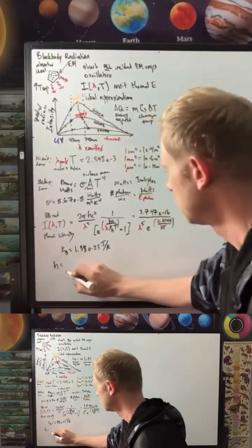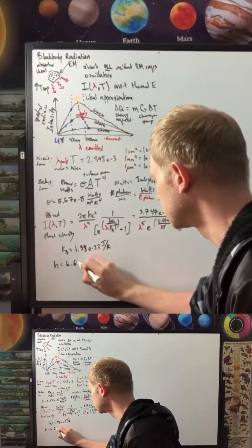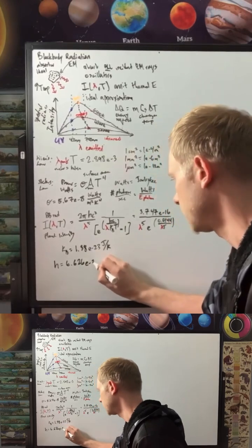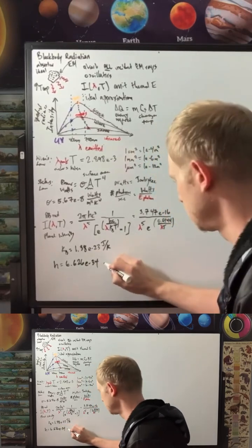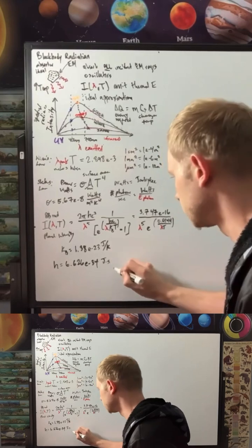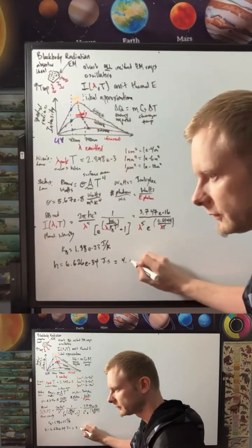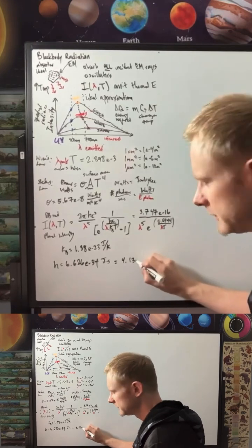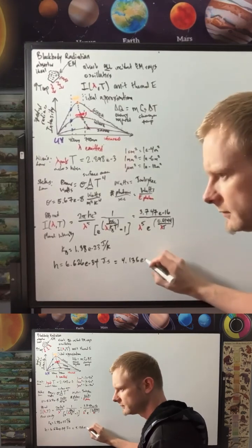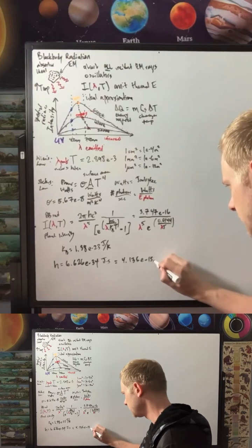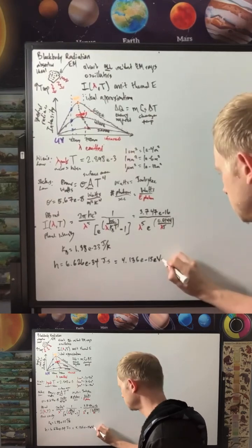which is going to be the Planck's constant, and this is going to be 6.626e to the negative 34 joules times seconds, and that's going to be equal to 4.136e to the negative 15 electron volts times seconds.